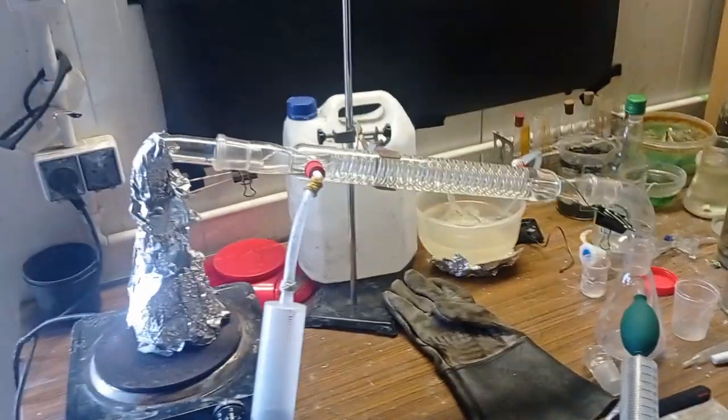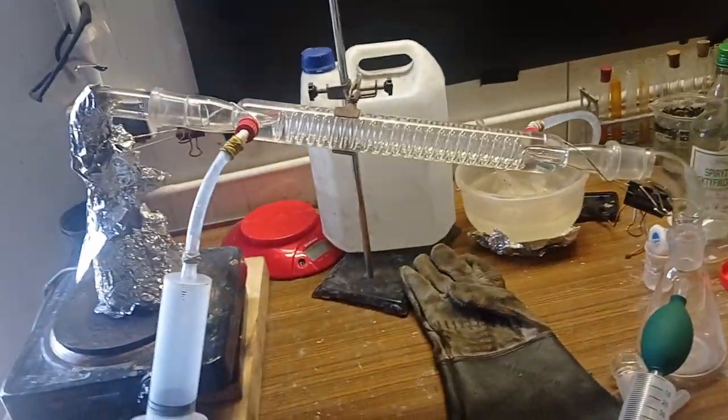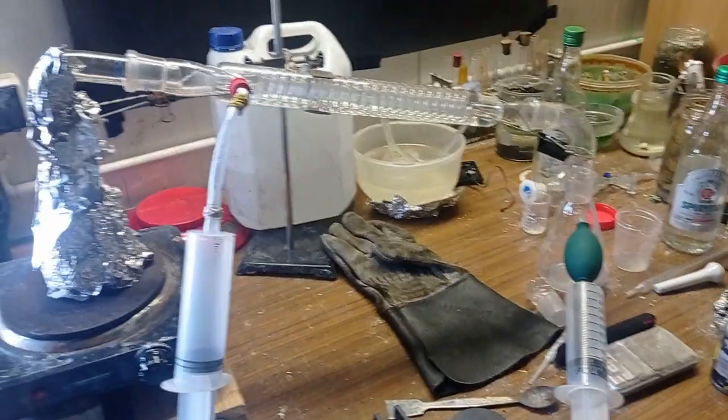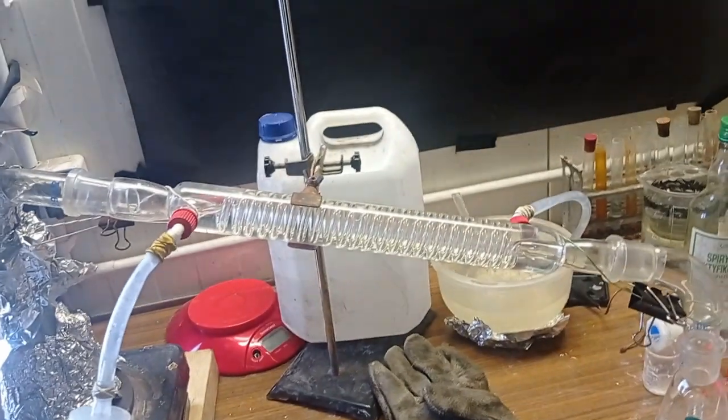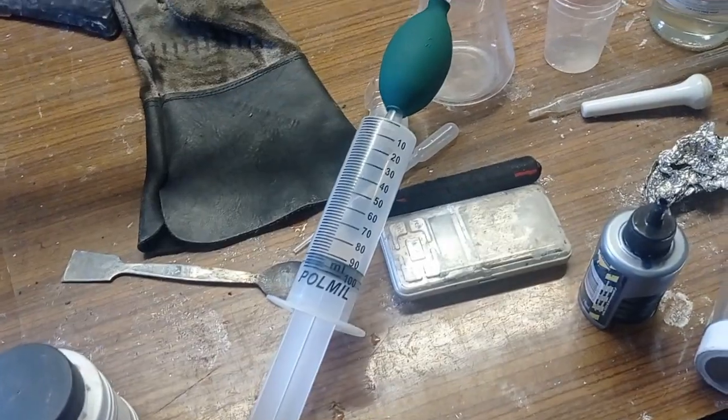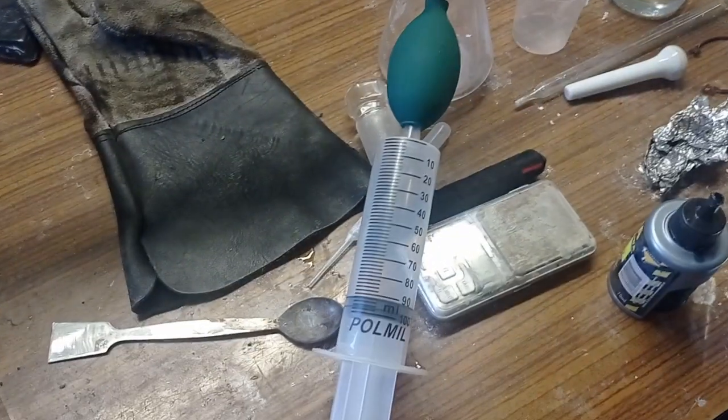After around six hours of reflux, now I'm distilling off the excess ethanol. I know that this column is not for distillation but I don't have a different one. I'm trying to play with lower pressure so ethanol boils faster.